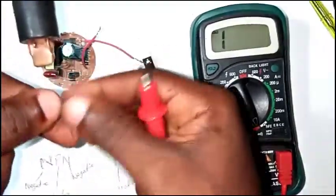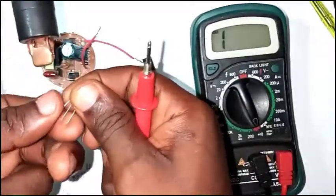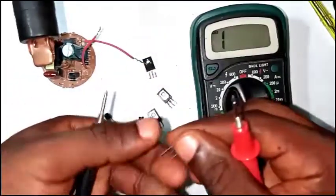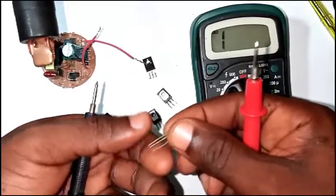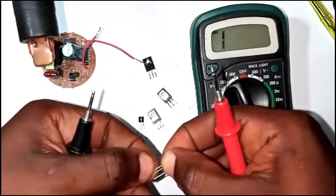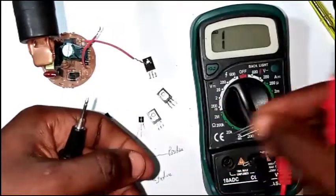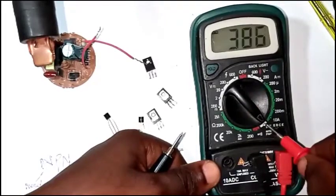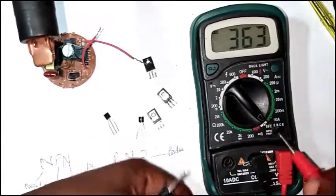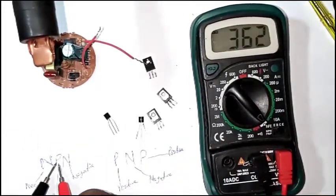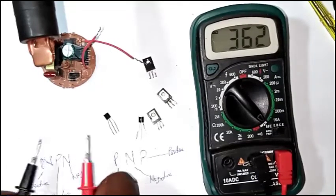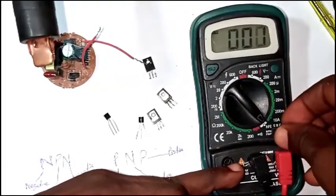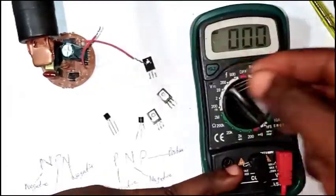Let me put it back in the HFE socket to confirm. I'll fit it in the socket properly. You can see it's reading on NPN — that confirms the middle is positive and the two outer pins are negative. I believe that is very clear. Now let me try PNP — not reading. So I've confirmed this transistor is NPN.